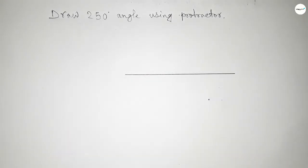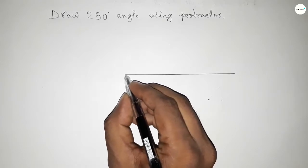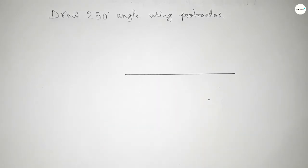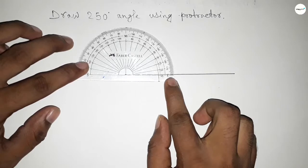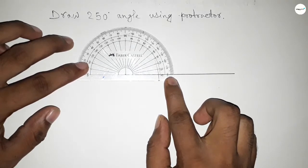Draw a line of any length. Next, mark a point here to draw the 250 degree angle on this point. Now place the protractor on the line perfectly by this way.